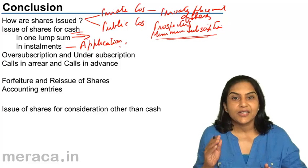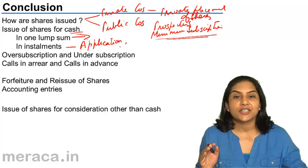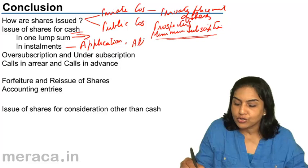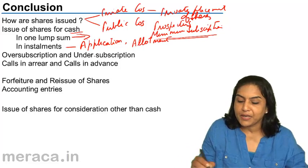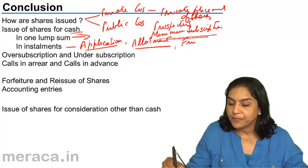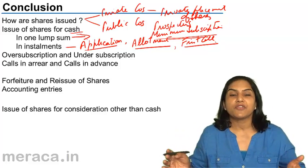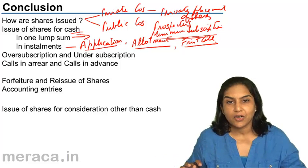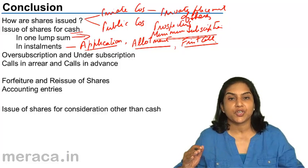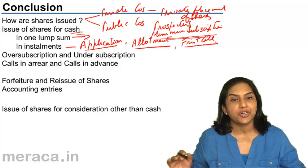Once application money is received, the directors go through the applications and, if everything is in order, shares are allotted. The moment shares are allotted, allotment money also becomes due — allotment is the second installment. The next installment is the first call. There may be a first call, second call, third call, and whichever is the last call is called the final call. So the installments are: application, allotment, and different calls.